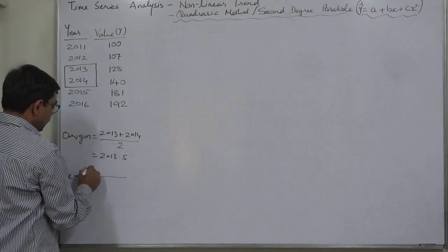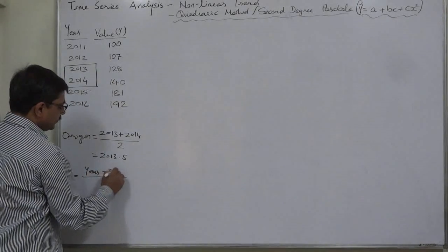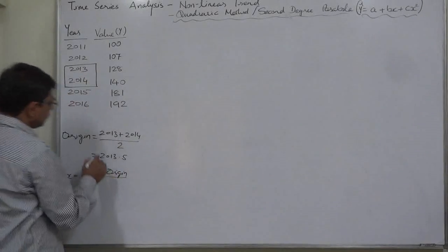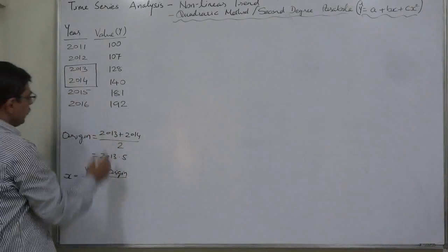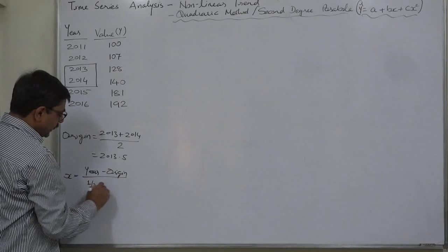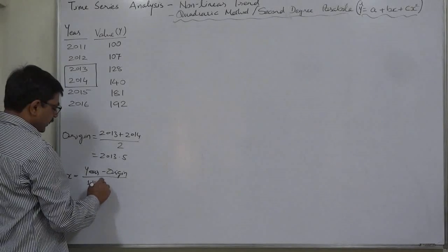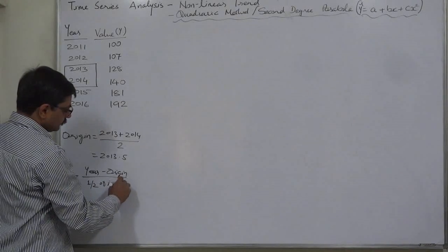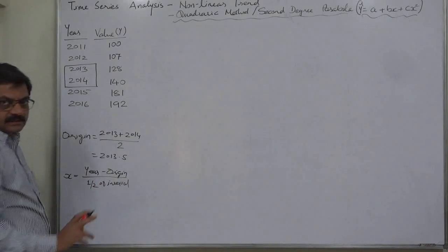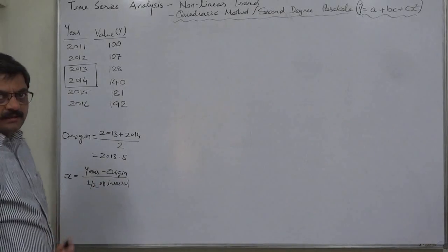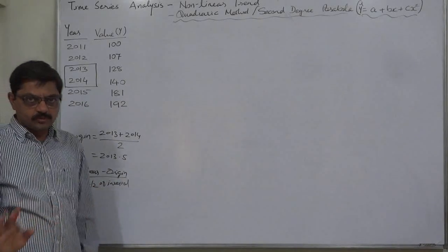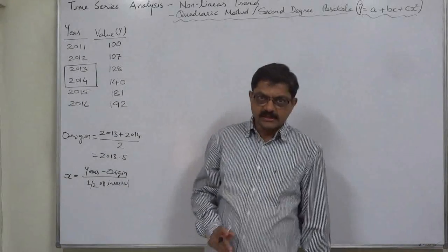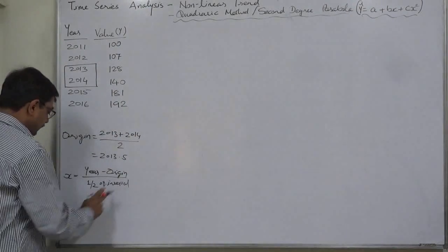X equals year minus origin. Since there are an even number of years, we divide by half of the interval — 0.5. This is not at all necessary; in many modern reference books, particularly those published from Western countries, this scaling is not done.